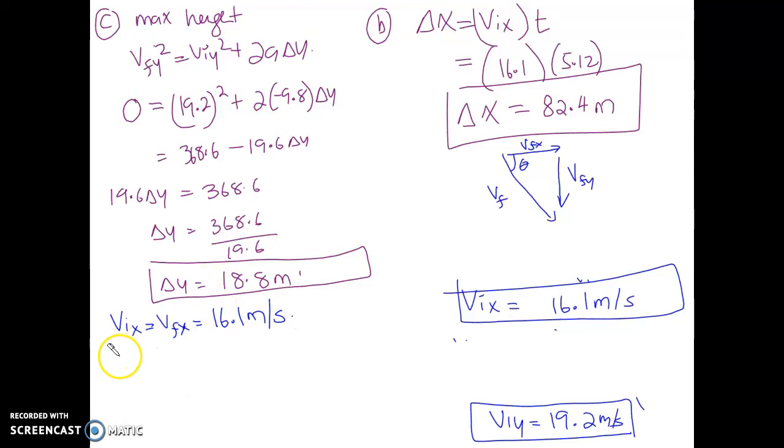However, we need to figure out my vfy. To figure out my vfy, we did the same thing yesterday: a times t plus viy equals vfy. So your vfy equals negative 9.8 times—oh I took off the time—5.12 seconds plus your viy of 19.2. What do you get for your vfy?